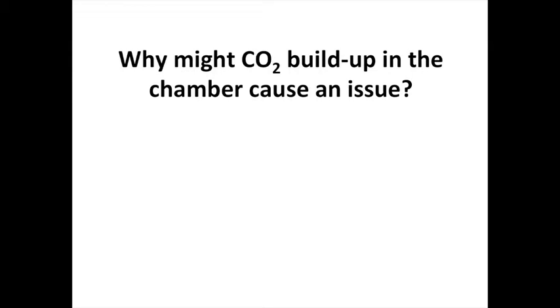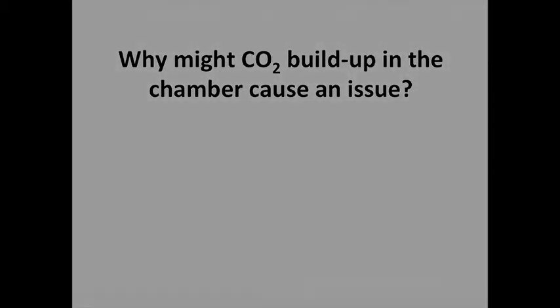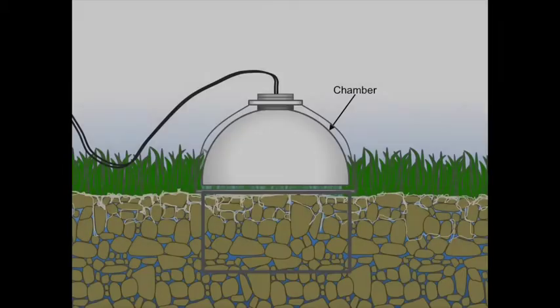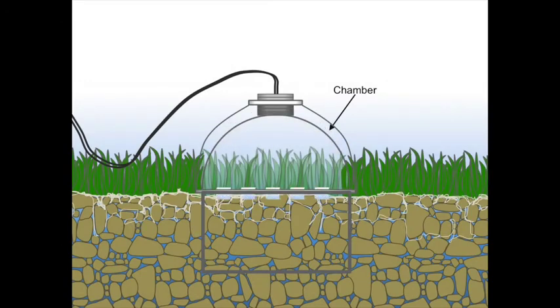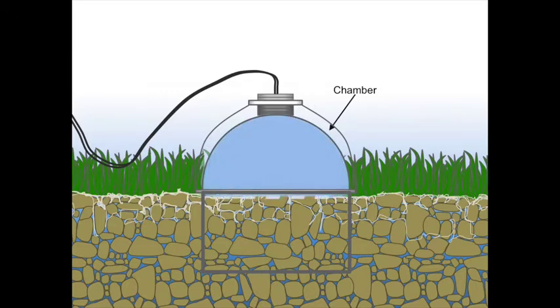The issue is that the CO2 buildup itself might slow the flux. Let's take a look at how this works. After we close the chamber, CO2 begins to build up, which is how we can take a measurement. But the increasing CO2 concentration in the chamber slows the rate of CO2 efflux. This creates a paradox, because we know that an increase in CO2 concentration in the chamber will slow the rate, but we have to build up CO2 in the chamber in order to measure that rate.